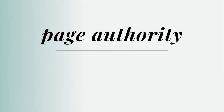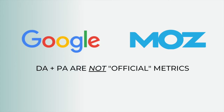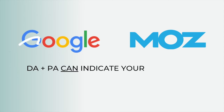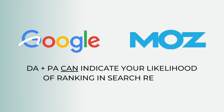It's important to keep in mind that these are not definitive metrics. Domain and page authority are scores developed by Moz, a software company. DA and PA have been widely adopted as useful metrics, but they're not directly connected to Google.